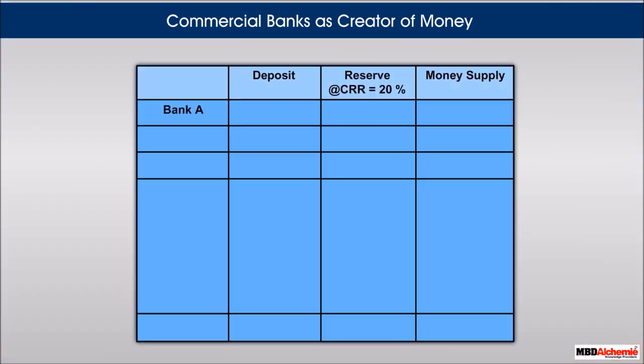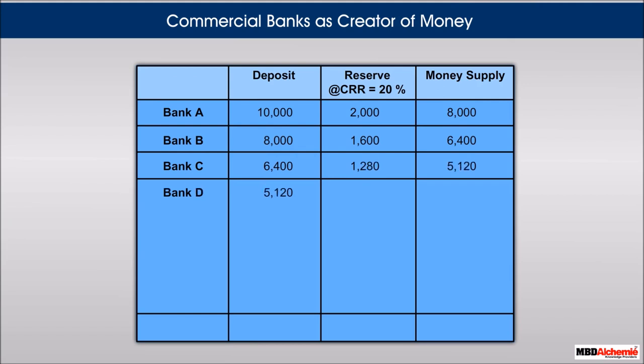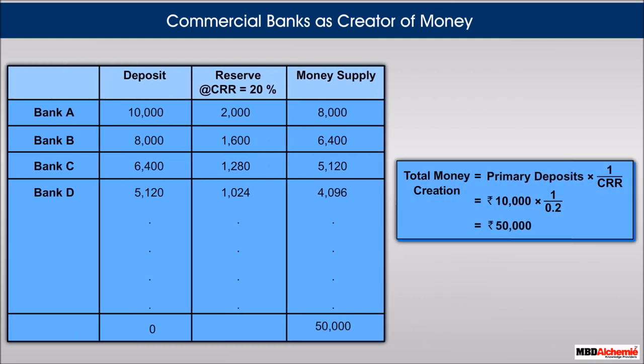This process of a deposit turning into a loan or investment, which again becomes a new deposit, goes on until the primary deposit of rupees 10,000 is completely exhausted. The total of all the deposits resulting from the primary deposit will be five times of rupees 10,000. Given the primary deposit and the CRR, the total money creation can be estimated accordingly.